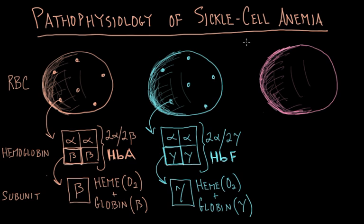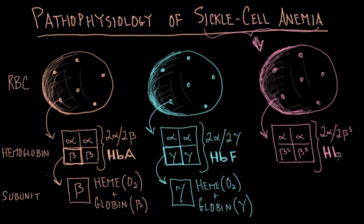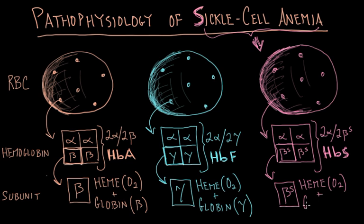Finally, looking at the red blood cell on the right — this is the red blood cell found in an individual with sickle cell anemia or sickle cell disease. It also has thousands of hemoglobin molecules, but they're different, and that makes all the difference. This hemoglobin molecule is made up of two alpha subunits, just like the others, but it has two beta-S subunits. It's called hemoglobin type S. Just like in the other cases, we would see a heme group — the oxygen-carrying group — and a protein called globin.